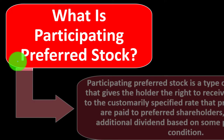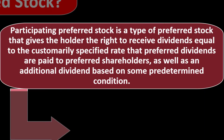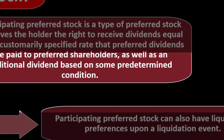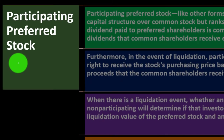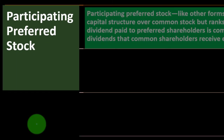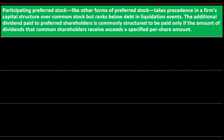Given that setup, what is participating preferred stock? Participating preferred stock is a type of preferred stock that gives the holder the right to receive dividends equal to the customarily specified rate that preferred dividends are paid to preferred shareholders, as well as an additional dividend based on some predetermined condition. Participating preferred stock can also have liquidation preferences upon a liquidation event — for example, if they go bankrupt. Like other forms of preferred stock, it takes precedence in a firm's capital structure over common stock but ranks below debt in liquidation events.